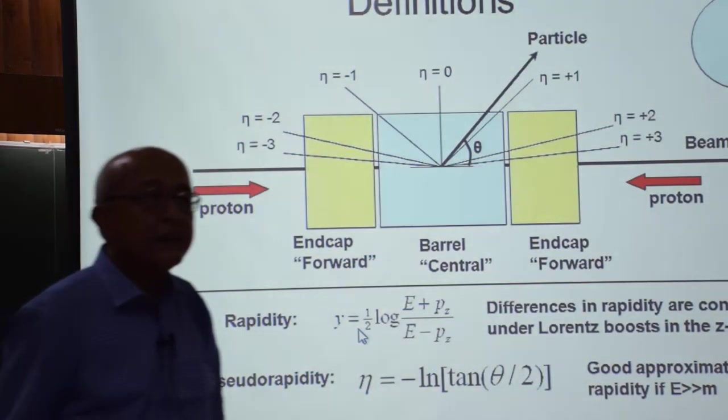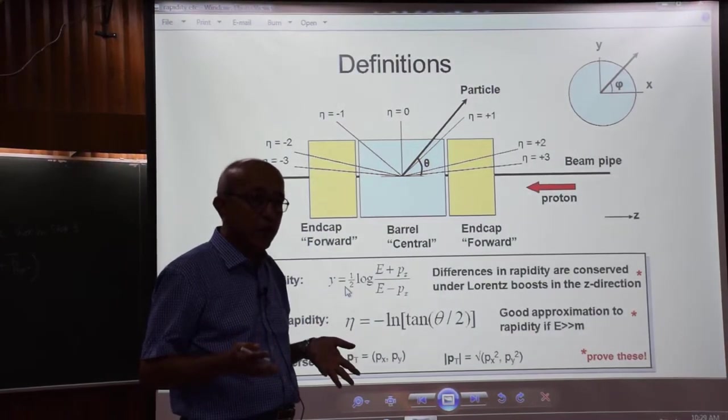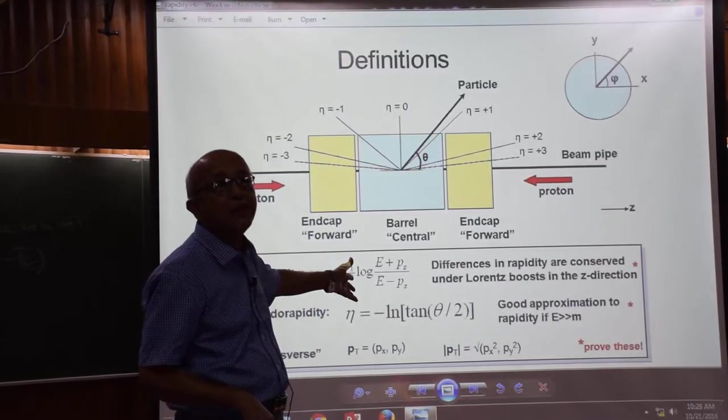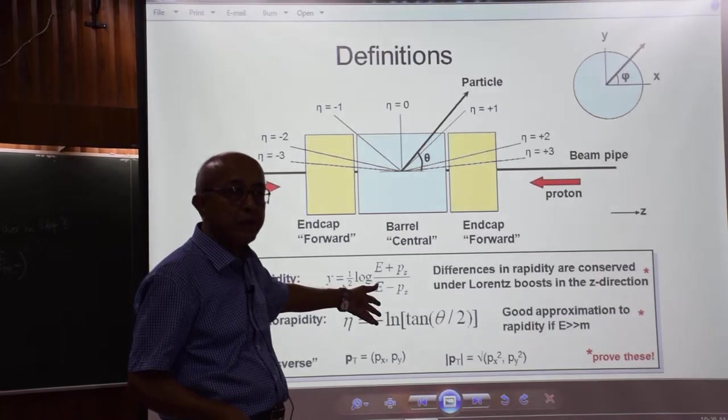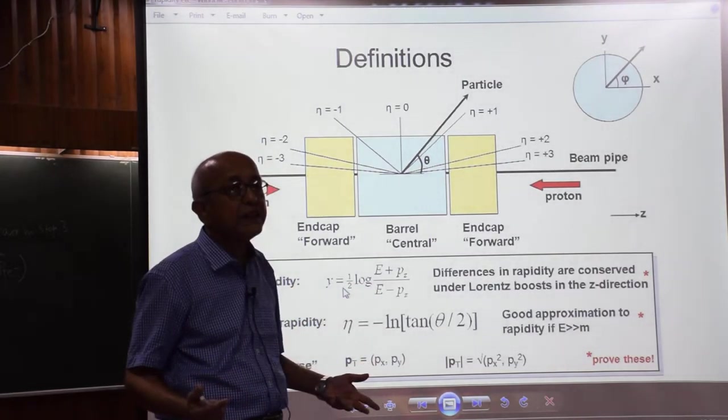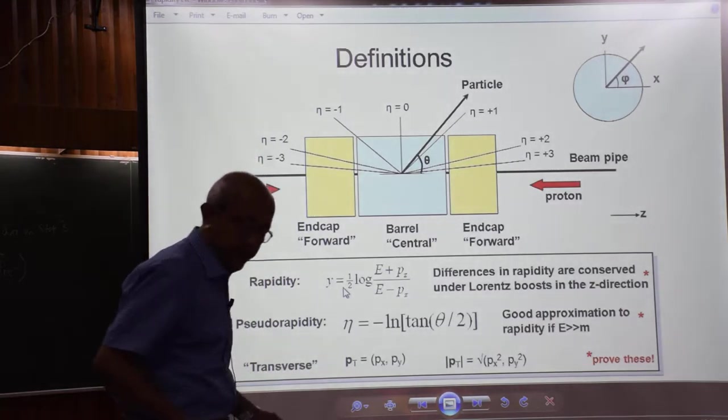Now, suppose it is a very high transverse momentum. Then, it means that longitudinal momentum is zero. So, the numerator will basically be approximately equal to the transverse momentum. The denominator will be the same. So, it is log 1 that means rapidity is zero.